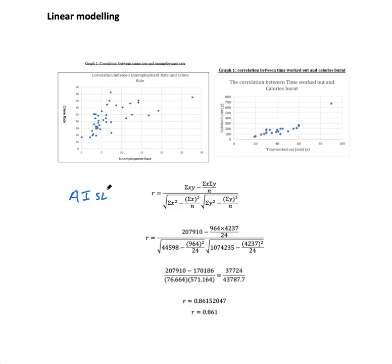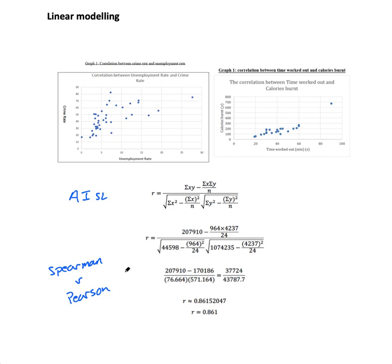For AI SL, or AA SL if you want, you can also look at Spearman versus Pearson — that adds an extra dimension where you compare the two correlation coefficients and consider which is more appropriate in a given situation. This is only in Applications.